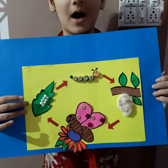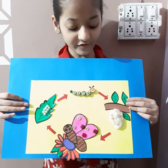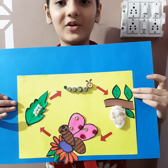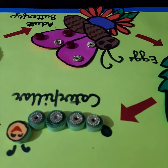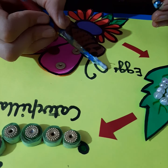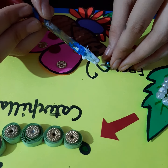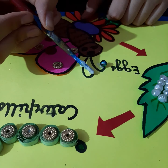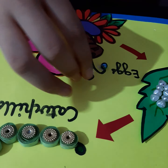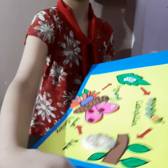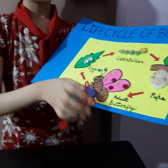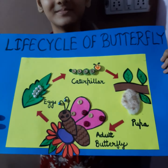Now label it with marker and then our beautiful life cycle of butterfly will be ready. At the end make antennas of butterfly and decorate it with beads. Now our beautiful life cycle of butterfly is ready. Hope you like it. Thank you everyone.